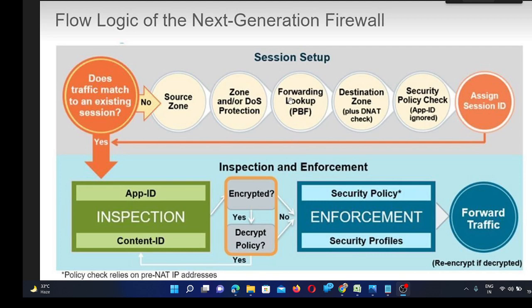After that, it will verify the forwarding lookup table to confirm what is the egress port or next-hop IP address for that packet. Next, it will check the destination zone, and at the same time it will also verify the denied list. After that, it will check the security policy, and here it will not verify the App-ID and Content-ID, so those will be ignored here.